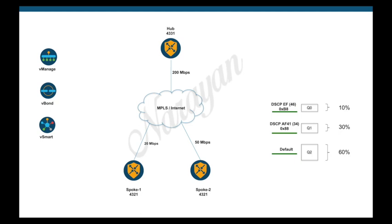Per-tunnel QoS provides the capability of regulating traffic from the hub towards the spokes at a per-spoke level. Since the bandwidth of the hub is higher than the spokes, configuring per-tunnel QoS ensures it cannot send excessive traffic to a small spoke with lesser bandwidth and overrun it.